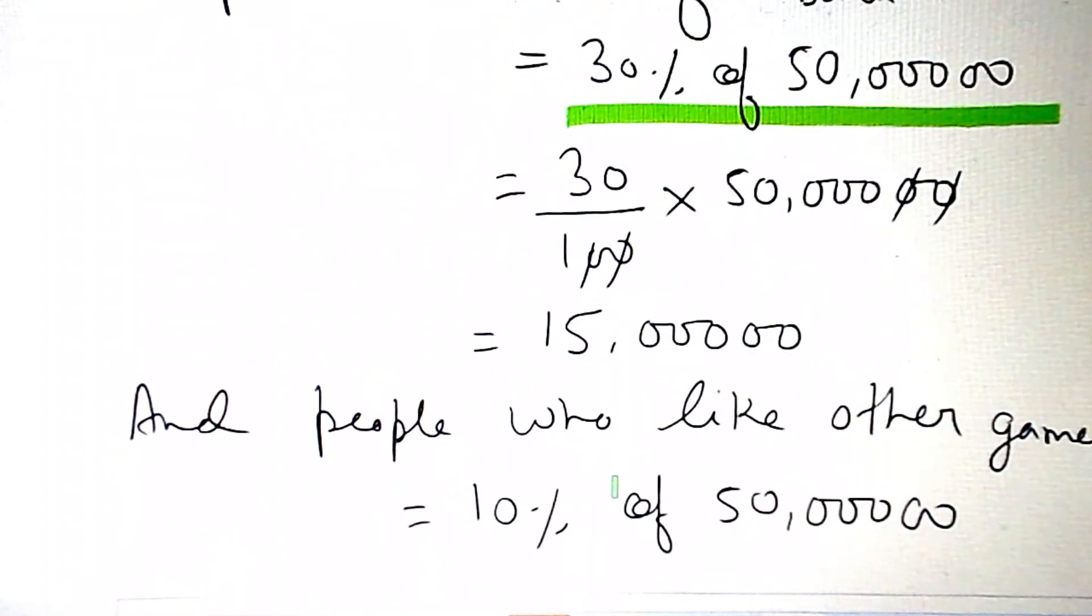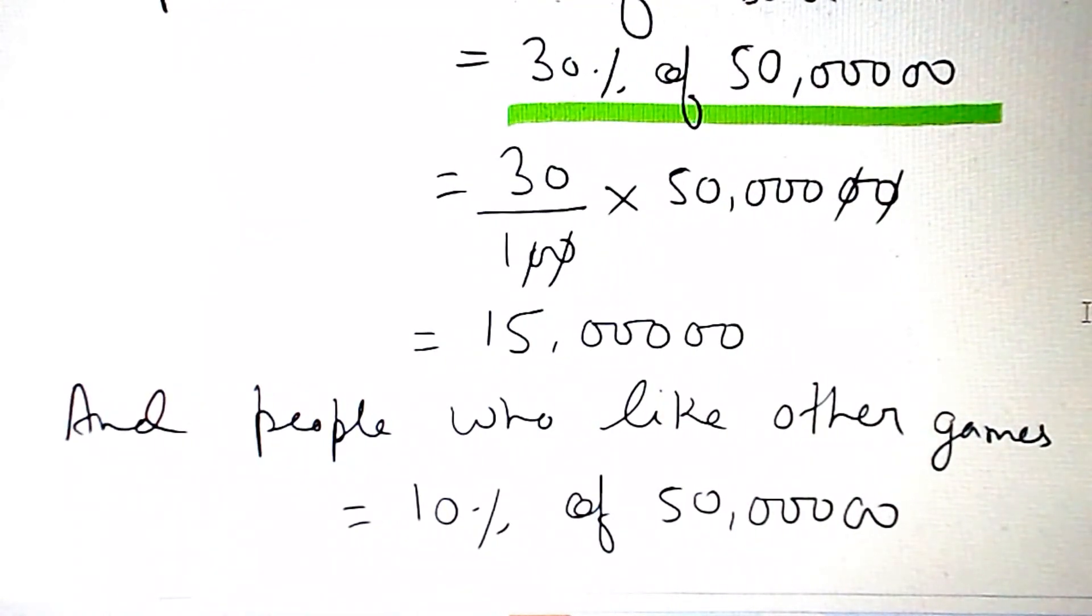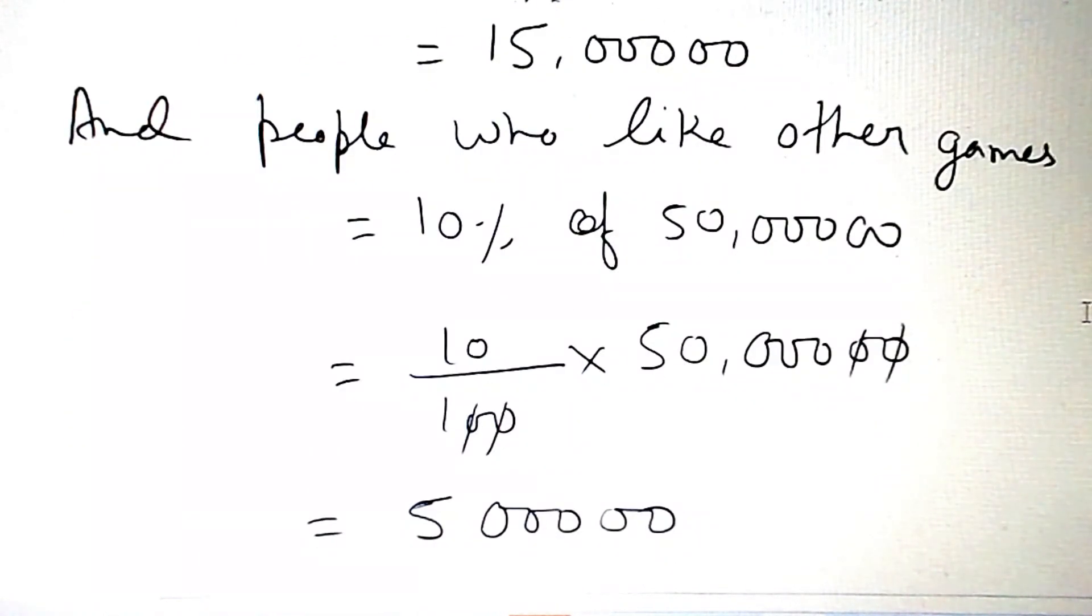People who like other games equals 10% of 50 lakh. That's 10 by 100 into 50 lakh. Two zeros cancel.